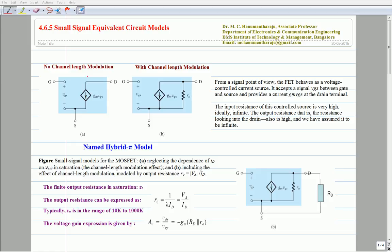If we replace this model with a finite resistance R-naught between the drain and source, then the model is shown in figure B.